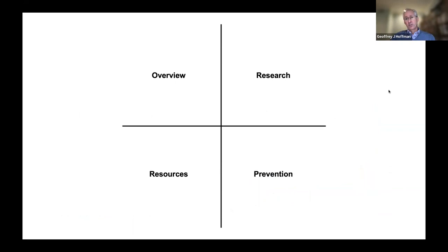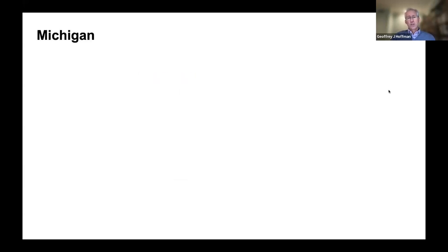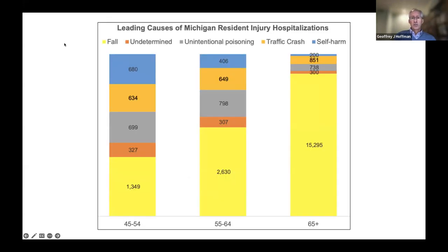About a third of older adults fall in a given year, and about 10% overall have an injury after a fall that's treated medically. There's great concern about falls leading to institutionalization and loss of independence. Michigan exhibits many of the same trends as nationally. Falls are the leading cause of injury-related ED use and hospitalization. In the 45 to 54 age group, falls represent about a third of all injury hospitalizations, but as we move into older age groups, they dominate the category.